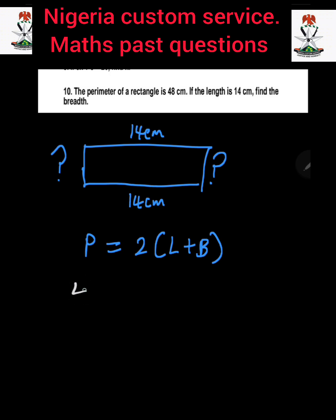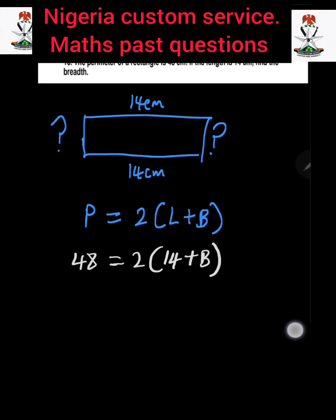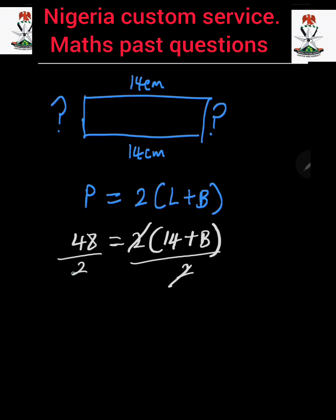In place of the perimeter, we have 48 cm, which equals 2 multiplied by the bracket of length 14 cm plus the breadth, which is unknown. The next thing we do is divide both sides by 2 to eliminate the 2. The left-hand side divided by 2, and the right-hand side divided by 2, so the 2 cancels. 48 divided by 2 gives us 24.